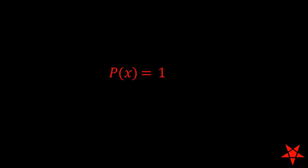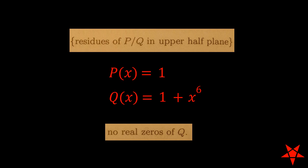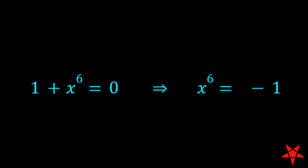For our purposes, p of x will be 1 and q of x will be 1 plus x to the sixth. Part 2 from Table 4.3.1 requires us to locate all of the residues in the upper half of the complex plane. It's important to note that no singularities are permitted on the real axis. Singularities only seem to be present when the denominator q becomes zero.